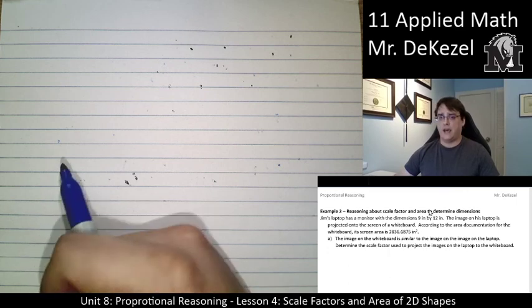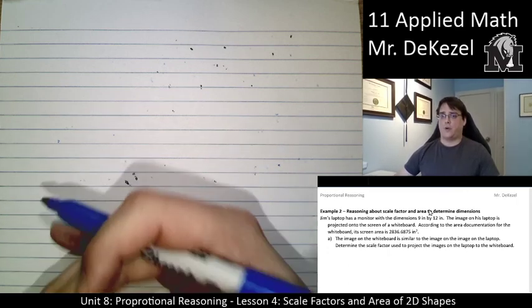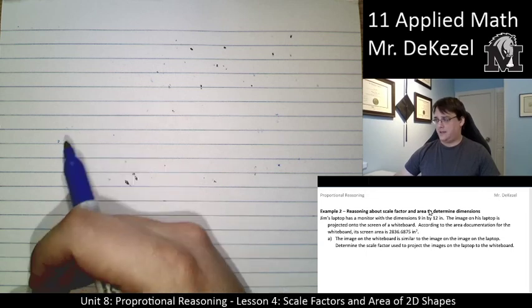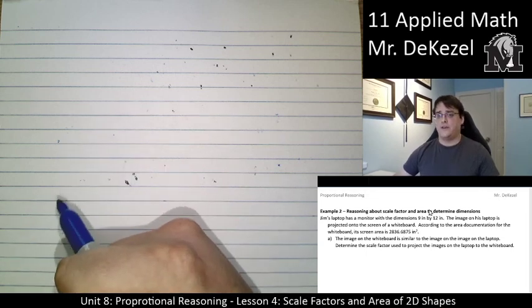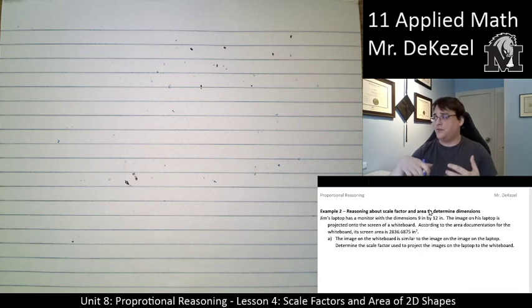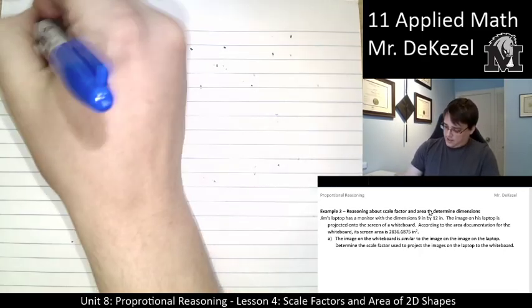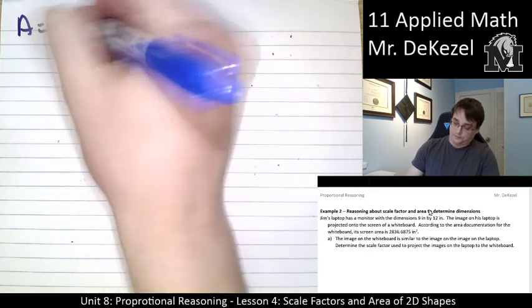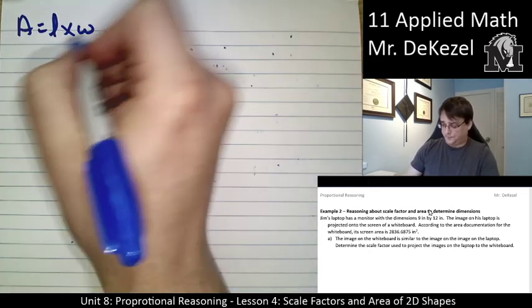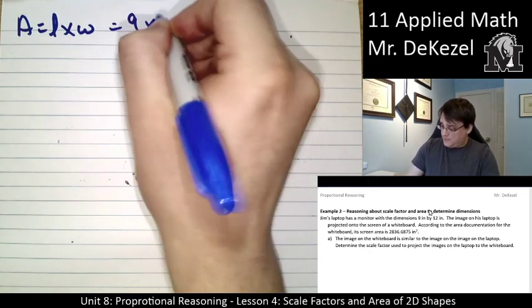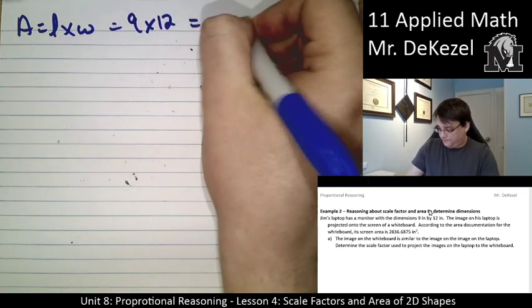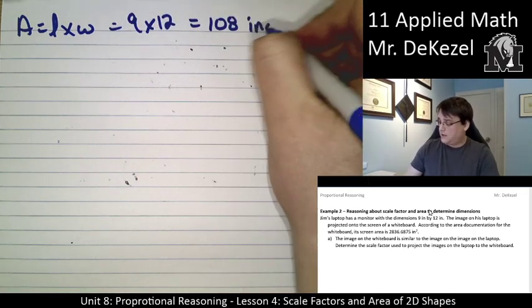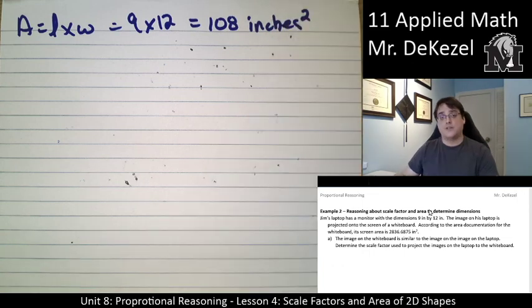Question A says, The image on the whiteboard is similar to the image on the laptop. Determine the scale factor used to project the images on the laptop to the whiteboard. So I am trying to find out what k is. Not k squared, but I want to find out what k is. The first thing I need to do is I need to find out the area of Jim's laptop so I can compare it to the area that he's projecting it to. So the area is going to be equal to the length times the width of his screen. I'm told that's 9 times 12, which is 108 inches squared.